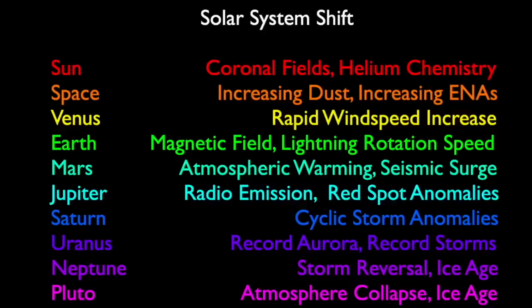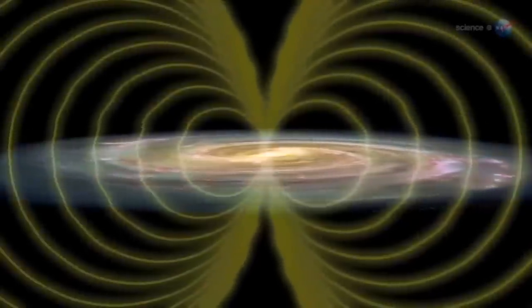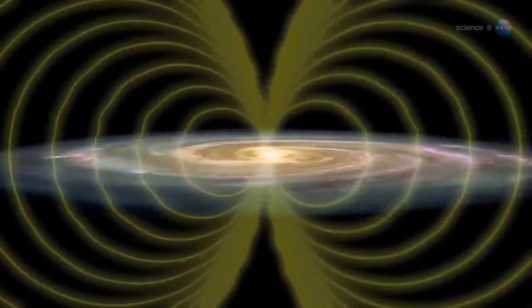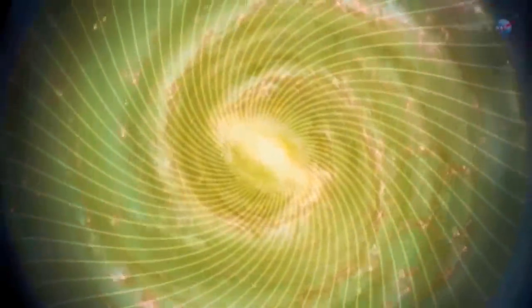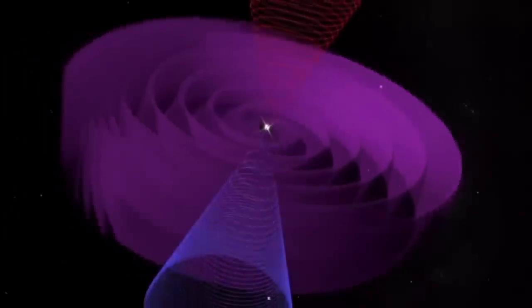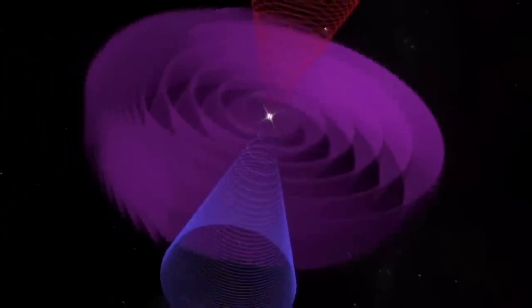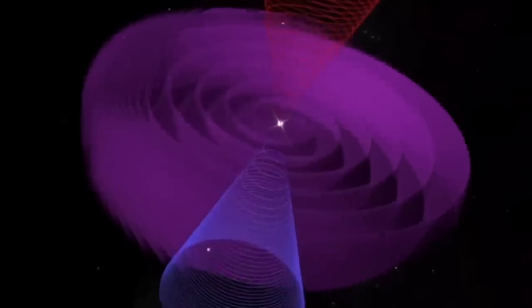It was surprising to have good enough data to know the dust was increasing in the inner solar system and the corona of the sun, and now that we know the ENAs and pickup ions are following suit, it makes the interplanetary space of the solar system one of the most evidence-heavy aspects of this ongoing shift. Everywhere we look, we find this evidence, and here on Earth, it's magnetic.